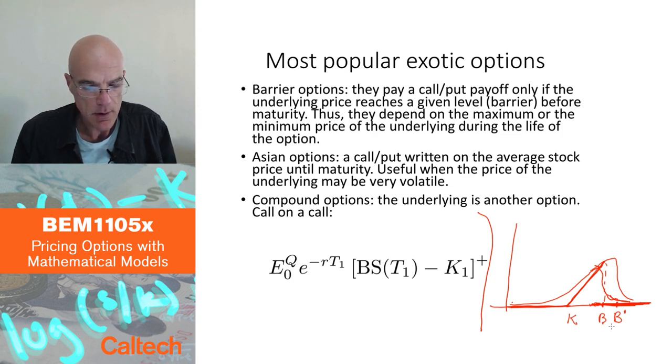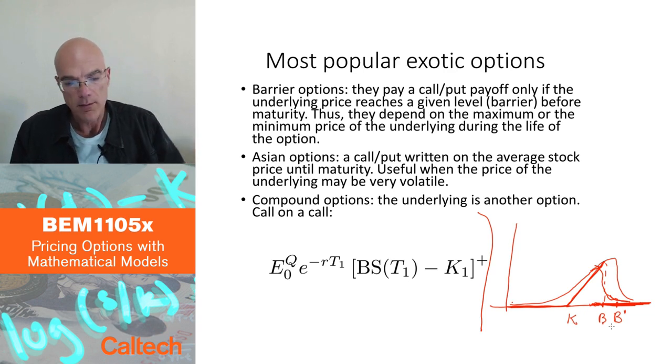Asian options, mentioned earlier in the course, are options on the average of the underlying, the average until maturity, and which are useful when the price of the underlying may be very volatile, like in energy electricity markets, where the price of electricity can vary very much from one day to another. Then it makes sense to trade in Asian options because averages are less volatile than the value of the electricity on a single date.